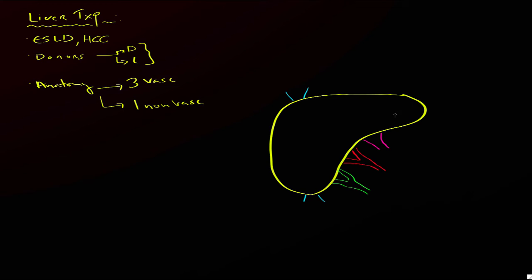This is all now attached to the recipient. In orange, I'm going to draw the recipient's respective vessels. Here is where we make the anastomosis to the portal vein of the recipient. Over here, we make an anastomosis to the hepatic artery. Down below, we make an anastomosis to the bile ducts — the biliary anastomosis. And finally, we make anastomosis to the IVC, attaching a portion of the recipient's IVC above and below.